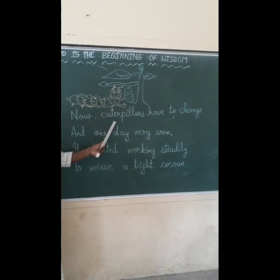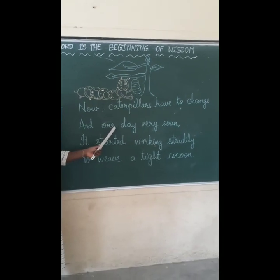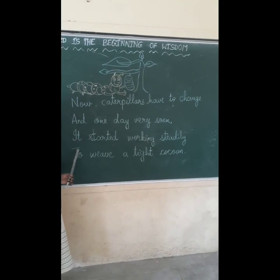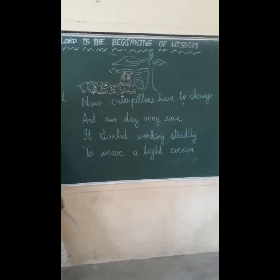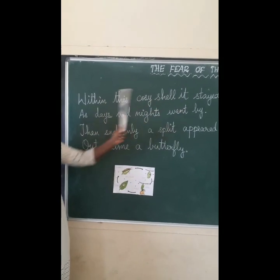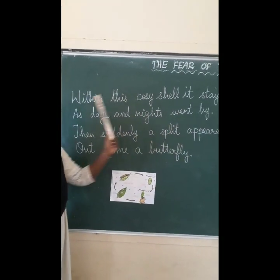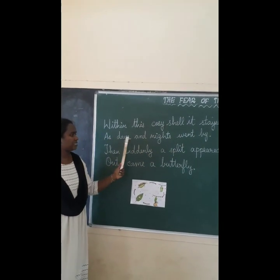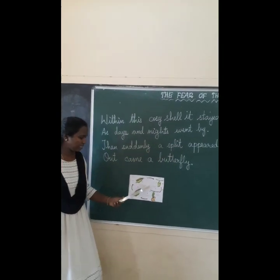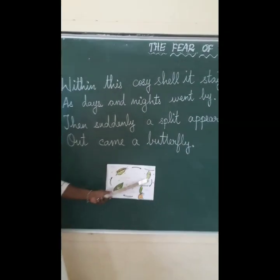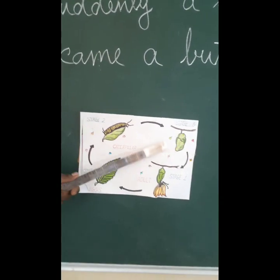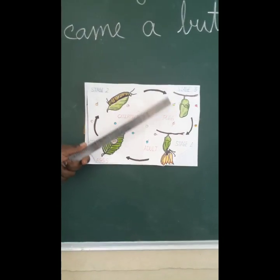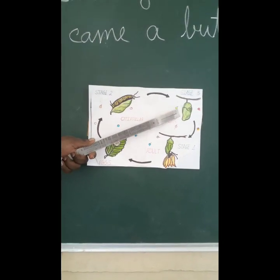It started working steadily to weave a cocoon. Within this cozy shell it stayed as days and nights went by. You can see this cozy shell where the caterpillar stays inside — it is comfortable inside. This is called the pupa.